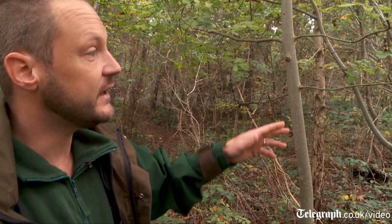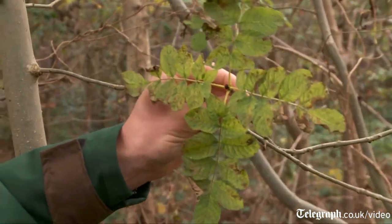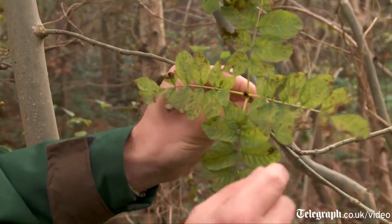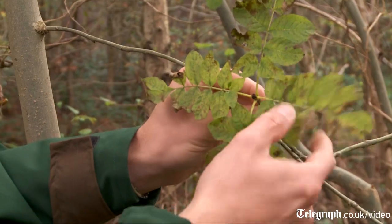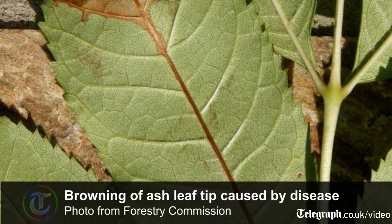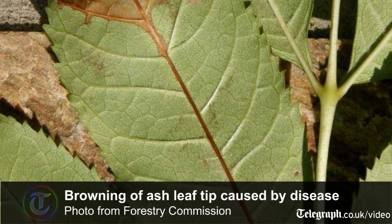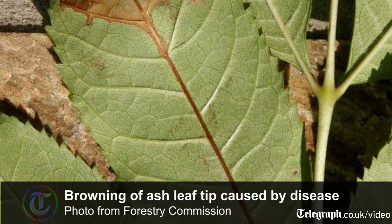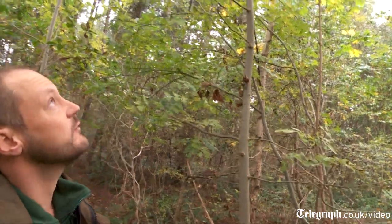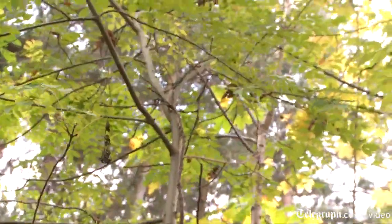Another thing to look for is the leaves dying back. Obviously at this time of year they'd be dying back anyway, but in spring or summer time they'll be curling up and dying back. The main shoot would also be dying back and going brown along the end, all the way back to the main area.